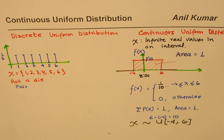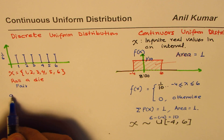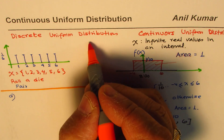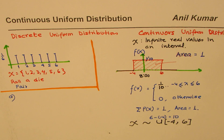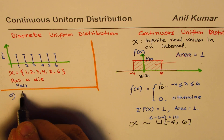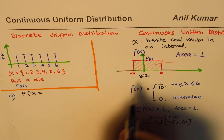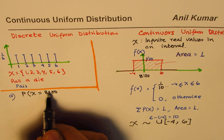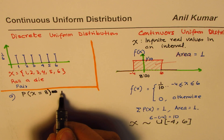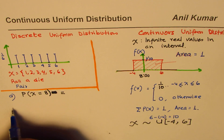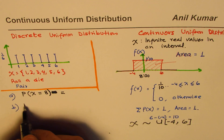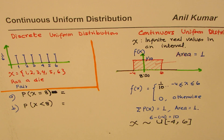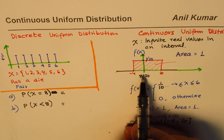Now let me ask a few questions based on this example. Question one: what is the probability for the teacher to come exactly at 8 a.m.? Question two: what is the probability that the teacher comes before time? Can you tell me the answers?